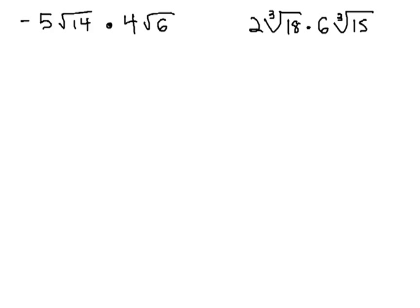As we multiply radicals, the product rule tells us that we can multiply the coefficients outside of the radicals, and we can multiply what is inside the radicals together.